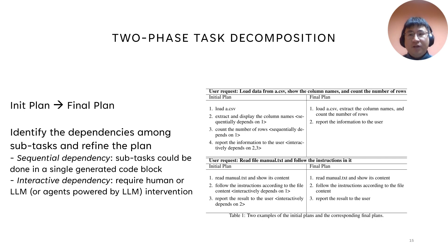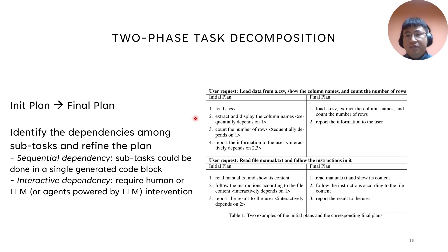However, we sometimes see the planner generates a plan that is too fine-grained. In this example, the user request is to load data from a CSV file, show the column names, and count the number of rows. We can actually see that the whole request can be done in a single code block. But if we look at the plan from the planner, it splits the task into several steps: step one is to load the file, step two is to extract the column names, step three is to count the number of rows, and finally it reports the information to the user. Although this plan is correct, it needs to call the model many times, leading to a waste of tokens and high latency.